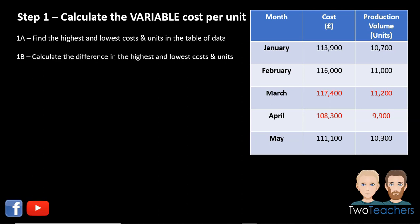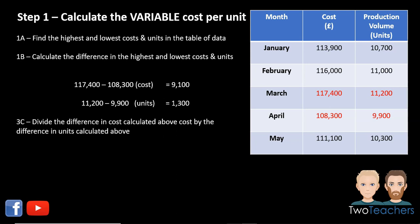Once you have these figures, calculate the difference between the highest and lowest costs and the highest and lowest units. This gives £9,100 for costs and 1,300 units. The final part of step one is to divide the difference in costs by the difference in units: £9,100 divided by 1,300 units gives you £7. This is your variable cost per unit — step one complete.